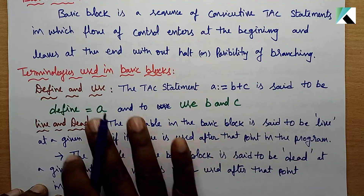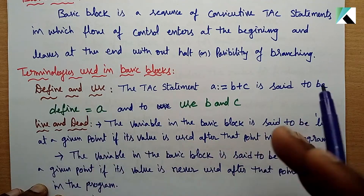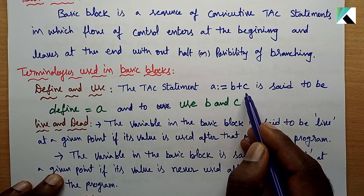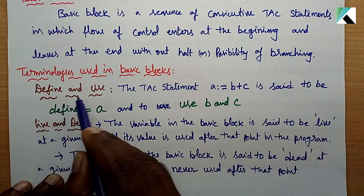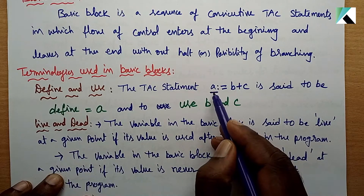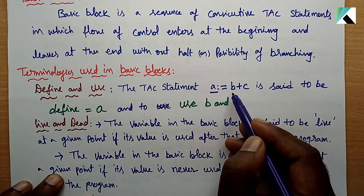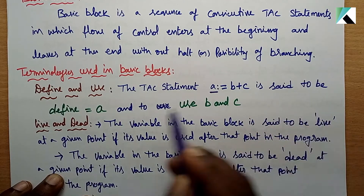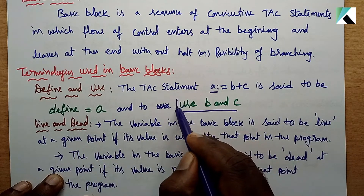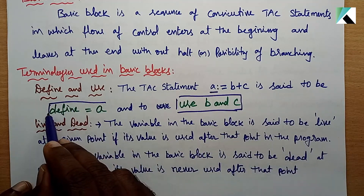The Flow Graph introduces new terminology. A Basic Block is a set of TAC statements. For example, the statement 'a = b + c' — here 'a' is defined, and 'b' and 'c' are used. So the statement is said to define 'a' and to use 'b' and 'c'.